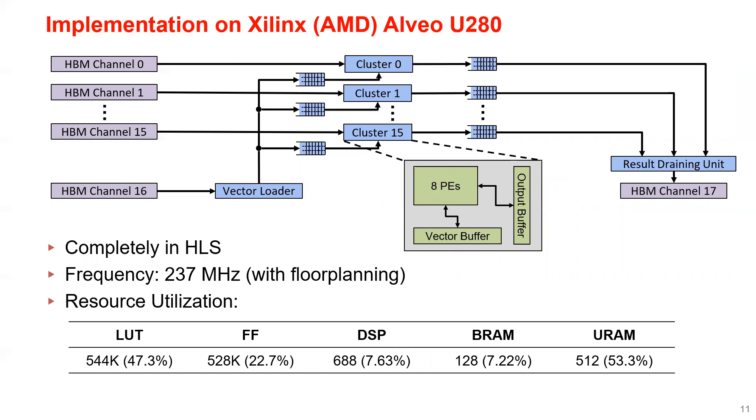The entire design is completely written in HLS and runs at 237 MHz. Of course, that's with the help of floor planning. I will not go into the details of the floor planning due to the interest of time, but we have a dedicated section in our paper, so please check it out if you're interested. This table shows the resource utilization of HiSparse.